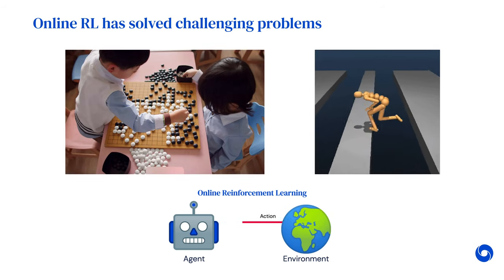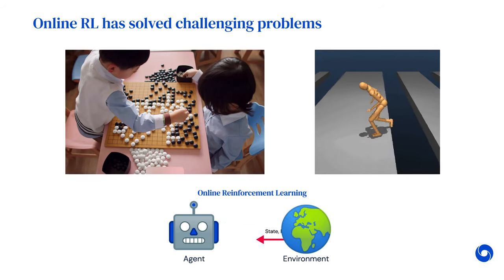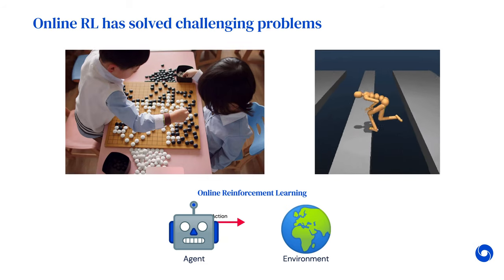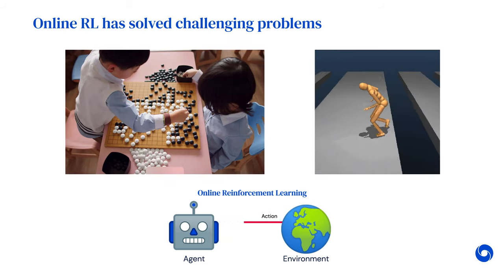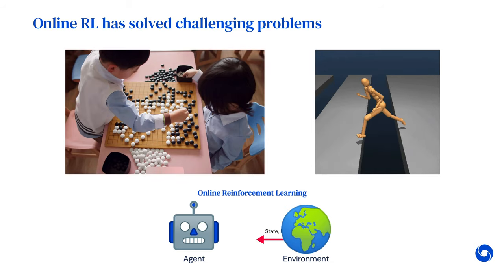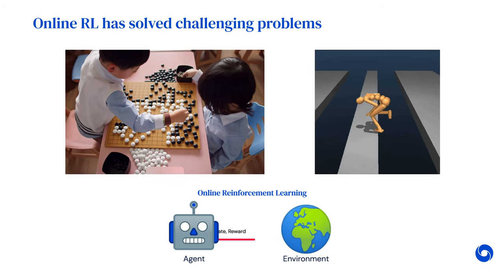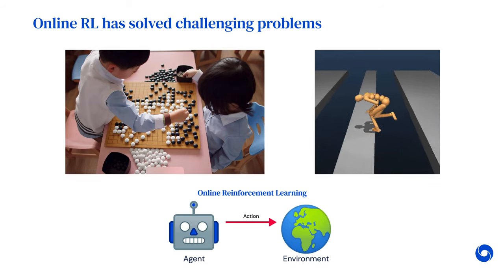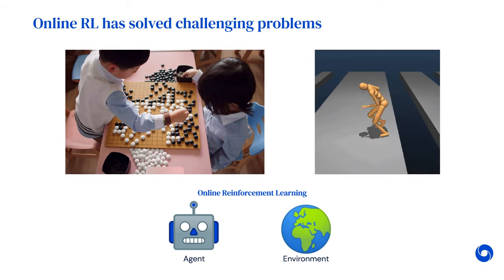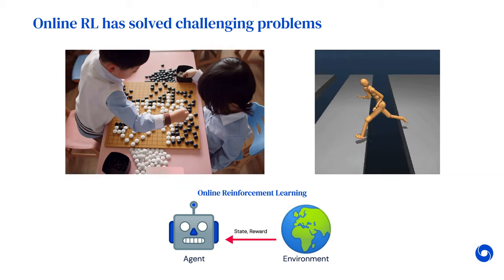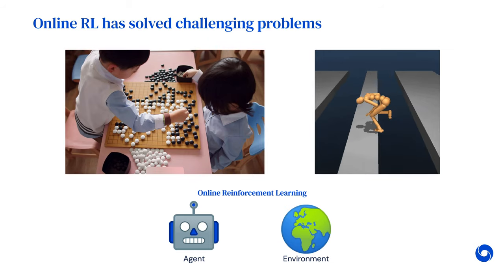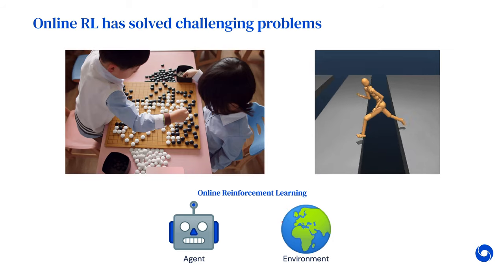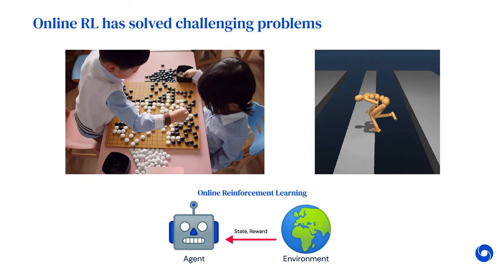Reinforcement learning has seen important breakthroughs, including learning directly from raw sensory streams to play Atari games, solving long-horizon reasoning problems such as Go, StarCraft II, or Dota, and learning motor control for high-dimensional simulated robots. However, these successes rely on repeated online interactions of an agent with an environment. This is tractable in simulation, but often not in the real world.